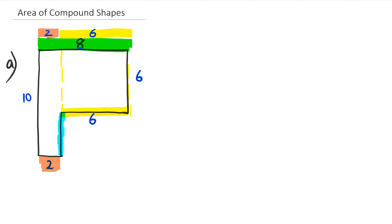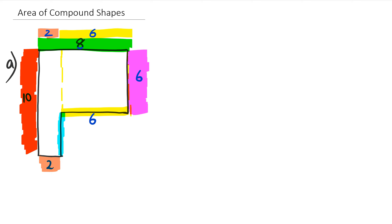Now we need to do the same thing for the blue part. I'll put the pink colored part as 6 and the red colored part as 10. The red part is the pink part (6) plus whatever the blue part is going to be. Since pink equals 6, and 6 plus 4 equals 10, the blue length is going to be 4.